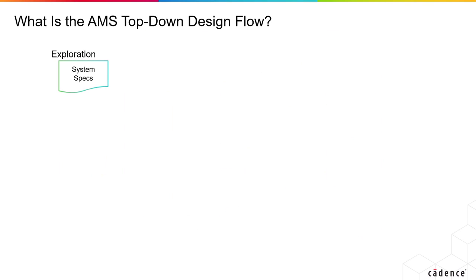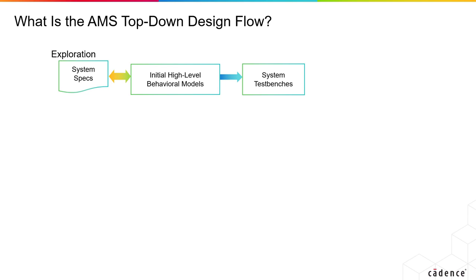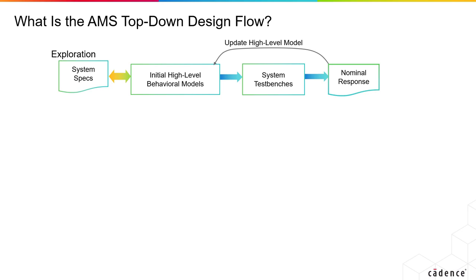We start off here with the system specs in the upper left — the exploration part. Given the specs, someone comes up with an initial high-level behavioral model for that system, saying 'I think this is the way it is going to work.' Then, based on those high-level models, someone builds some test benches to try to catch them out and see if it works as it should. We do some tests and get some nominal response, and it may or may not be working exactly as you expect. So there can be some feedback where you go back and update those high-level models, until you finally get this high-level set of models that we think is the right way to build this system.